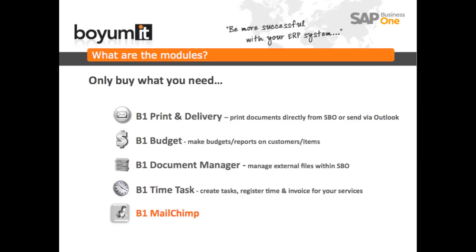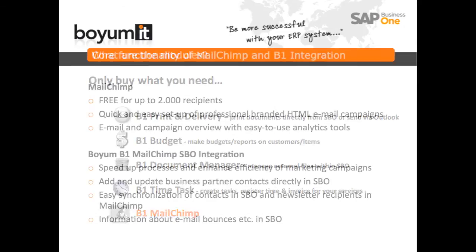These modules are B1 Print and Delivery, B1 Budget, B1 Document Manager, B1 Time Task, and of course the new B1 Mailchimp module. In this video I'll be concentrating on B1 Mailchimp, but you can find more information about the other modules on our website at www.boyom-it.com.